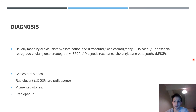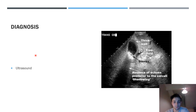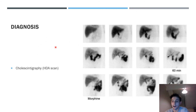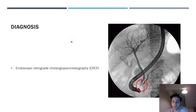On ultrasound, you can see a stone within the gallbladder, and note that the gallbladder wall appears very thick — a sign of cholecystitis where the walls become inflamed. Cholescintigraphy can also identify abnormalities, though it is less commonly used today. On ERCP, you can see the device injecting contrast to visualize the biliary tree, with the gallbladder visible and then the liver further up.